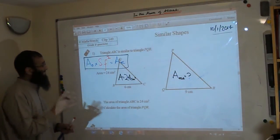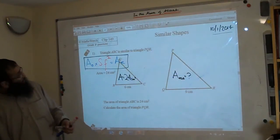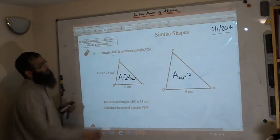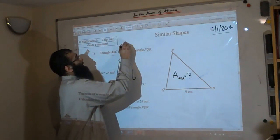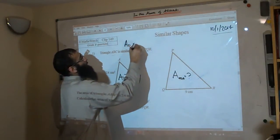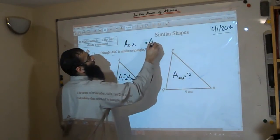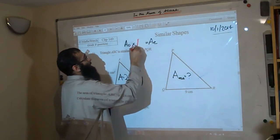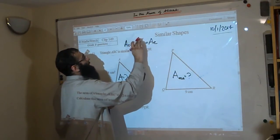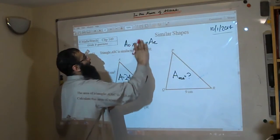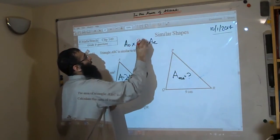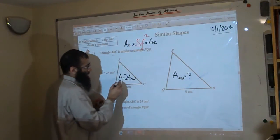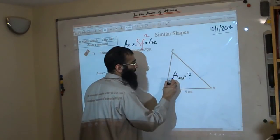So we're going to be using that particular rule. Now in this particular question I'm just going to rub that off and write it slightly further away. It's actually crashing into the question, I'll write on top of here. This is the area of the original, this is the area of the enlarged.